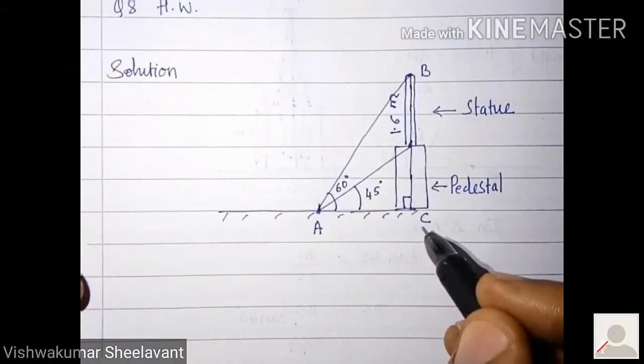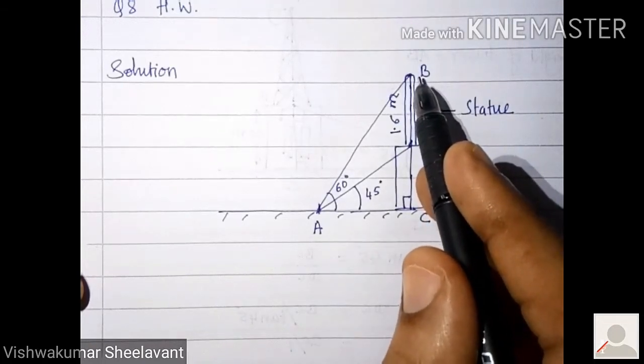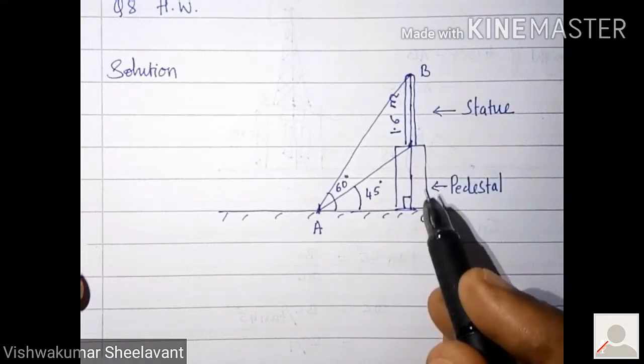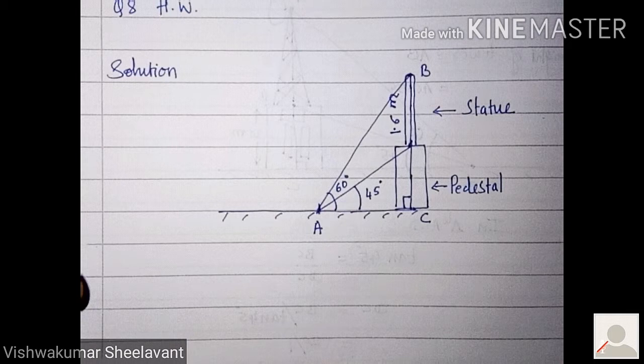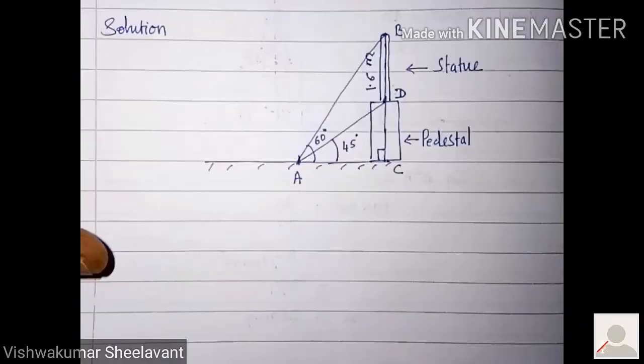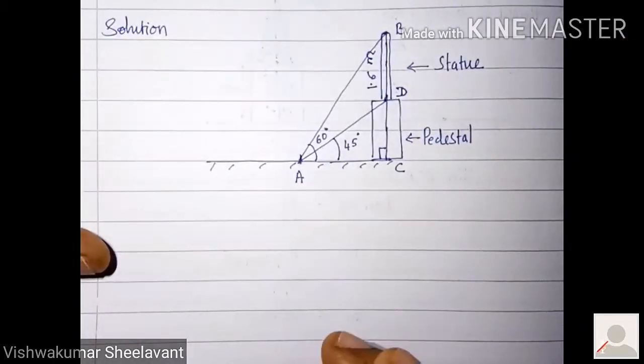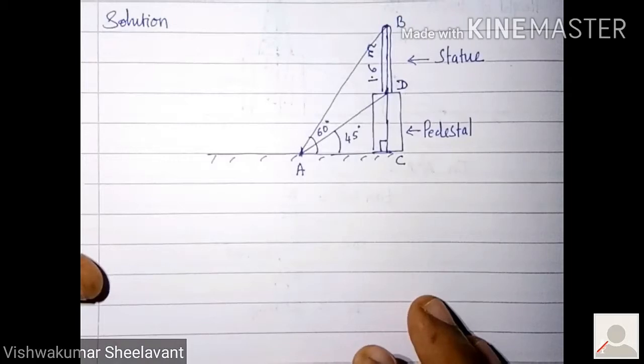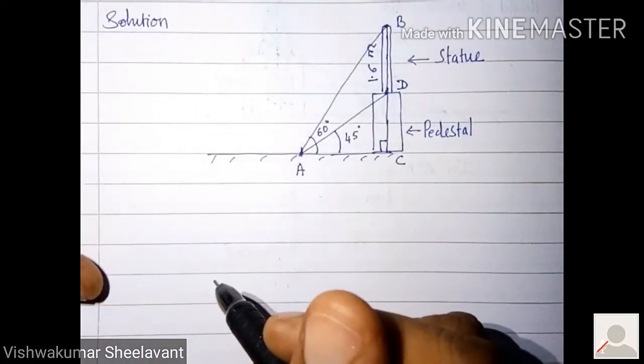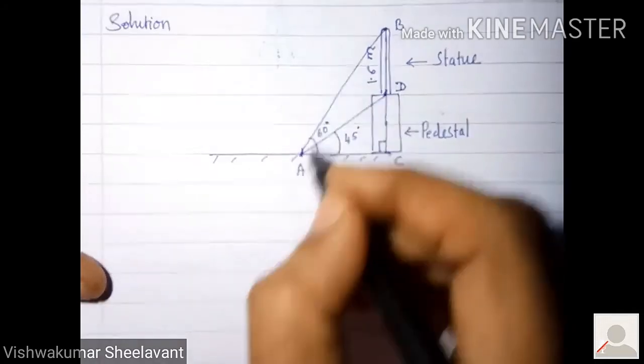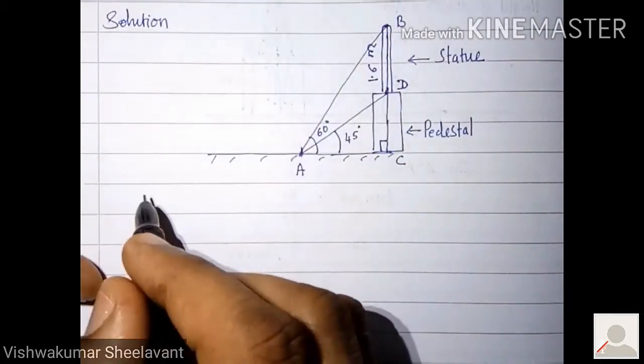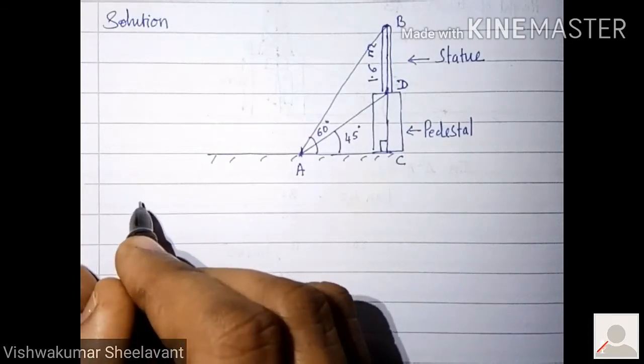Complete a right angle triangle here. Call the top of statue as B and base of pedestal as C. Call the top point of pedestal as D. We have to consider two triangles here: one is triangle ADC and another one is triangle ABC.